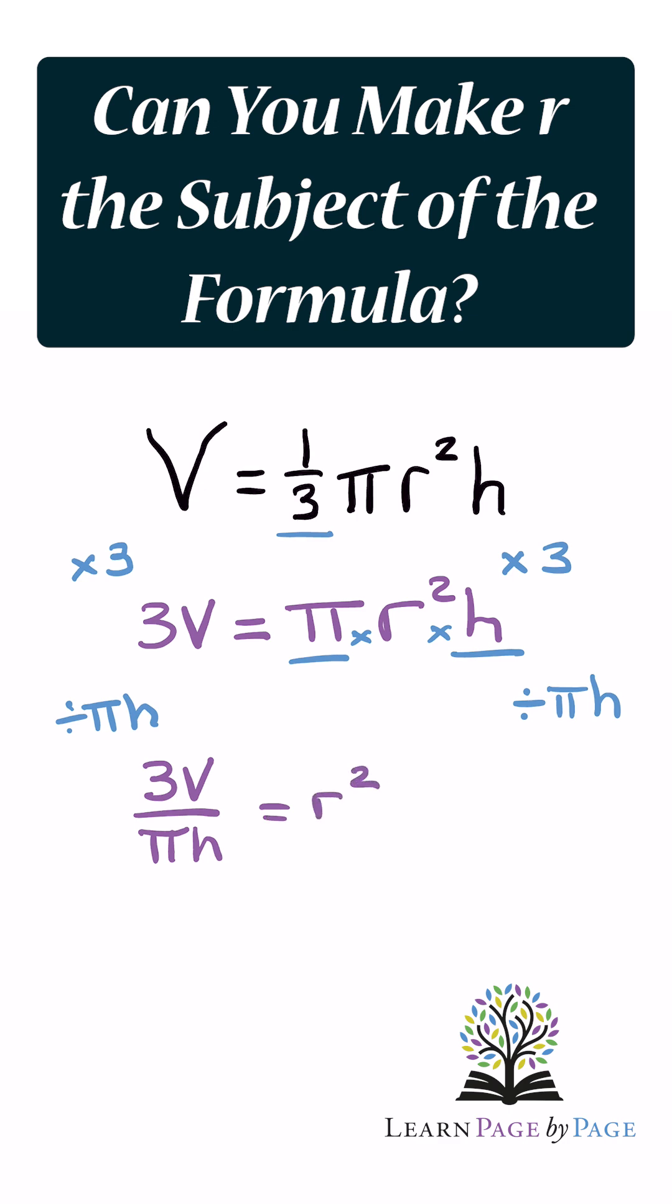Now a lot of people think that we've made r the subject, but we haven't. We've made r squared the subject here, so we need to get rid of this 2. And as it's a squared, the opposite of a squared is a square root.